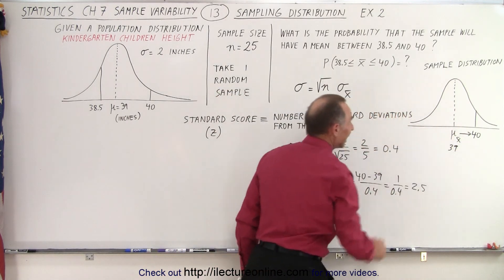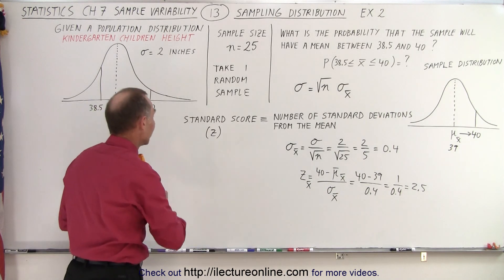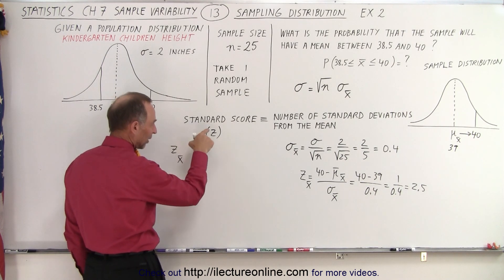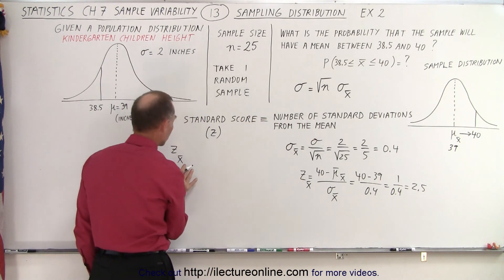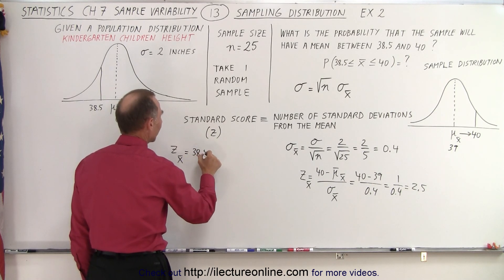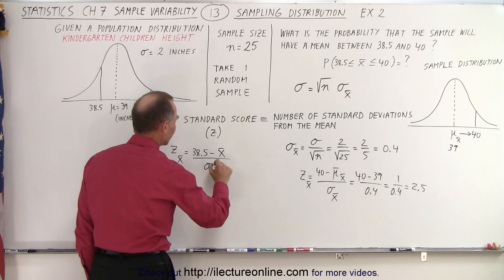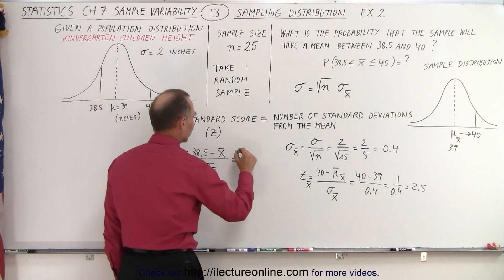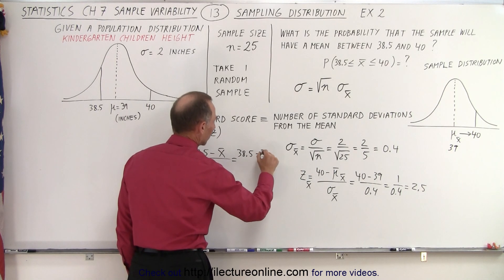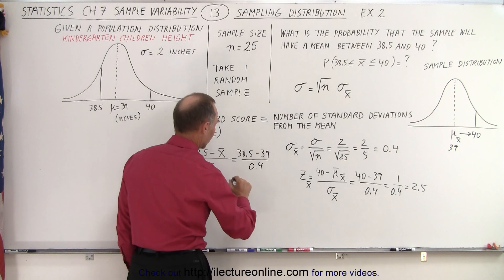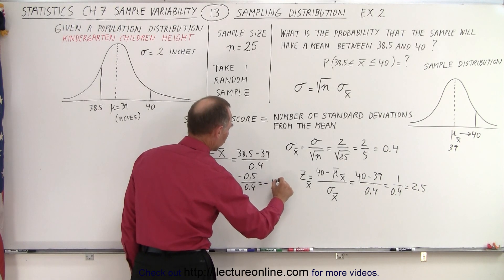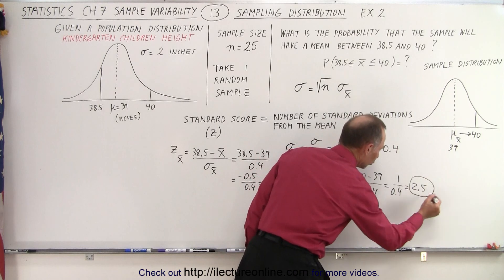Now we need to do the same for the left side. Z for the left side of the mean in our sample distribution equals 38.5 minus the mean of 39, divided by the standard deviation of the sample distribution of 0.4. That gives us negative 0.5 divided by 0.4, which equals minus 1.25. So we now have our two Z scores: 2.5 to the right and minus 1.25 to the left.